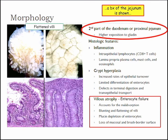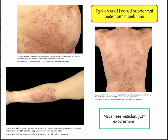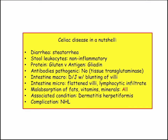Dermatitis herpetiformis looks herpes-like with little vesicles. It's extremely pruritic — that's a key feature. It's common in patients with celiac disease. If a celiac patient is coming in itching, that tells you they're not compliant with their gluten-free diet. Be familiar with IgA deposits at the subepidermal membrane — IgA from the gut is a good association. You never see the rash clearly because patients are always excoriated from scratching.